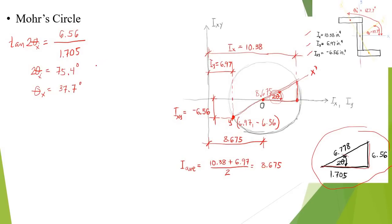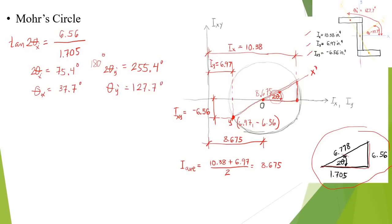Adding 180 degrees to determine the orientation for Y prime, we have 2θ_Y prime plus 180 equals 255.4 degrees, and θ_Y prime equals 127.7 degrees.